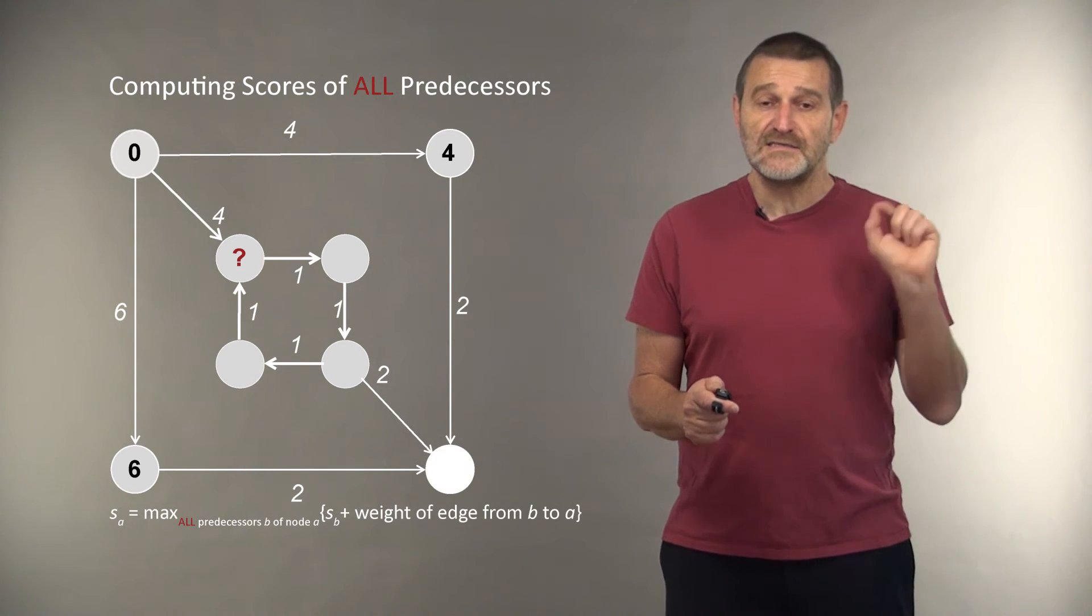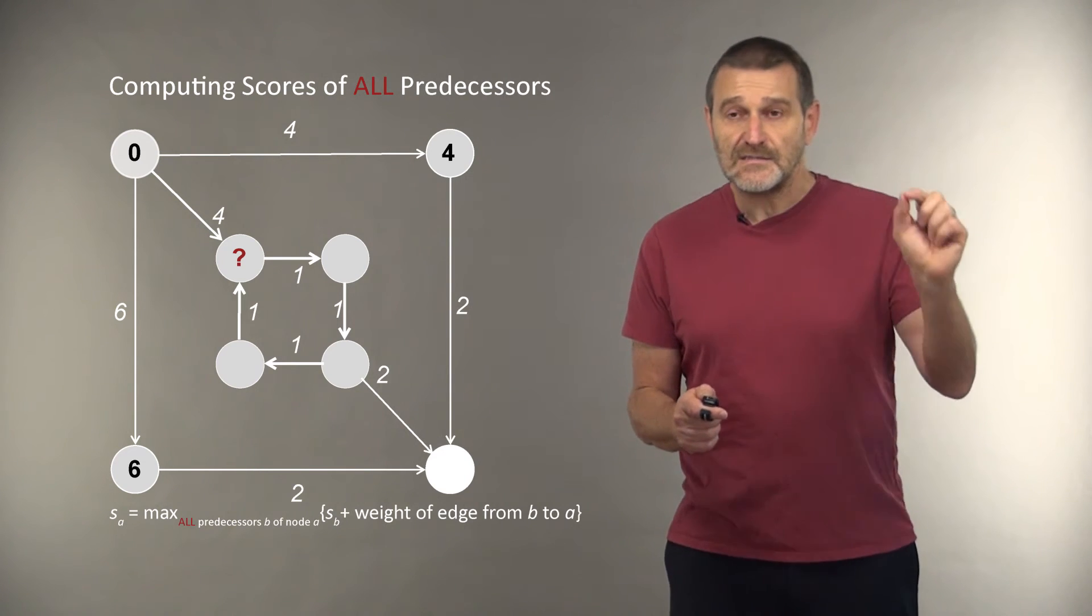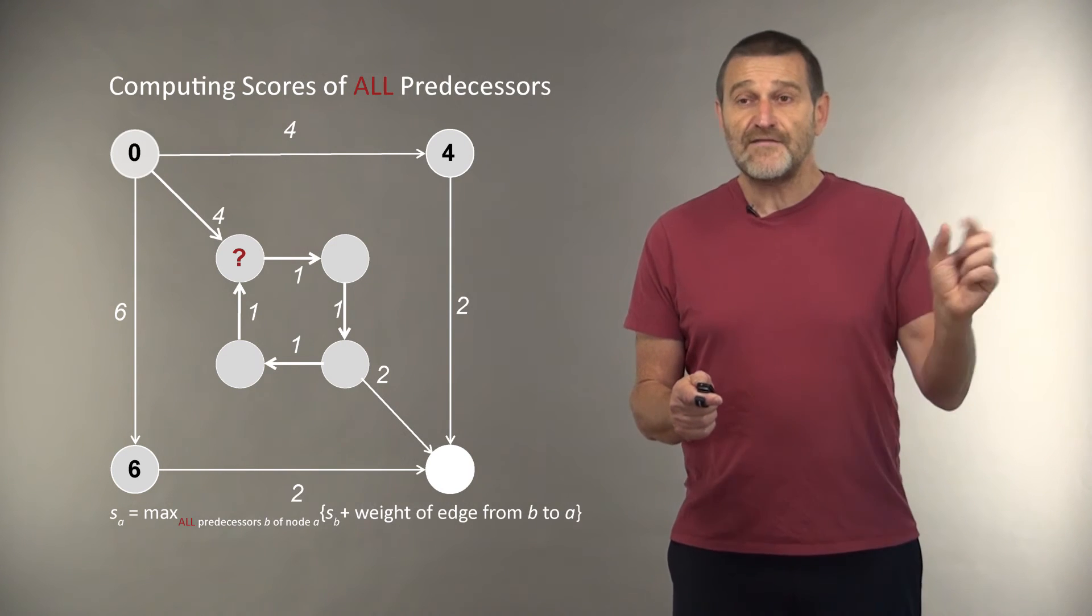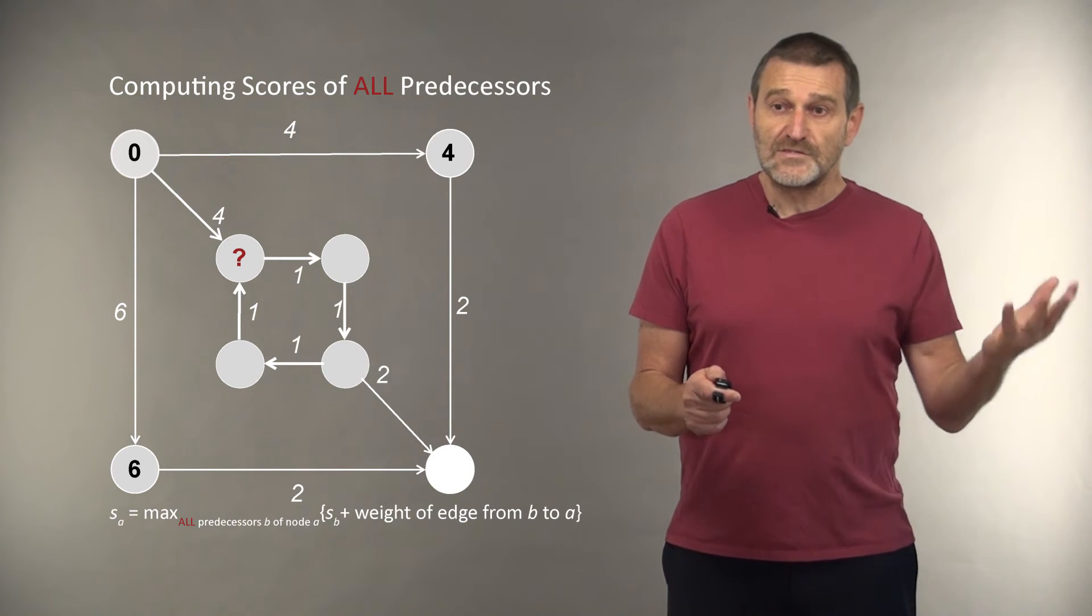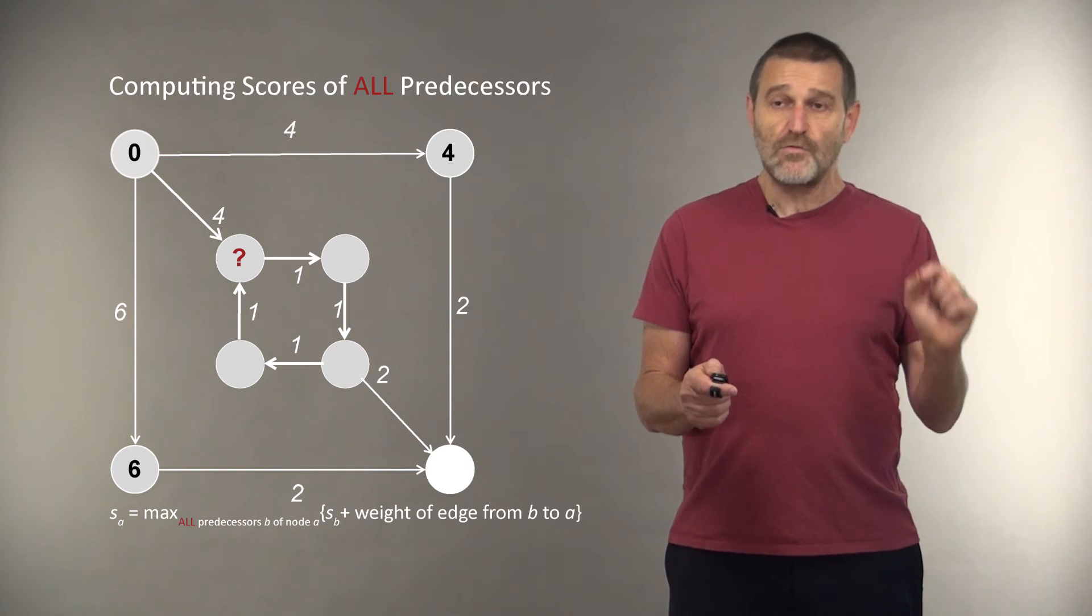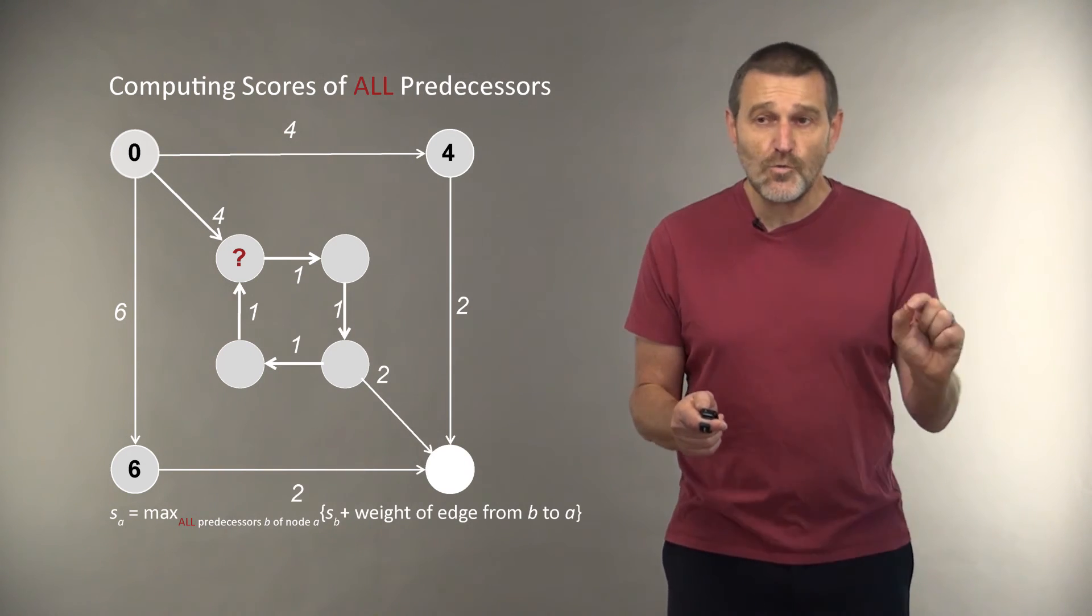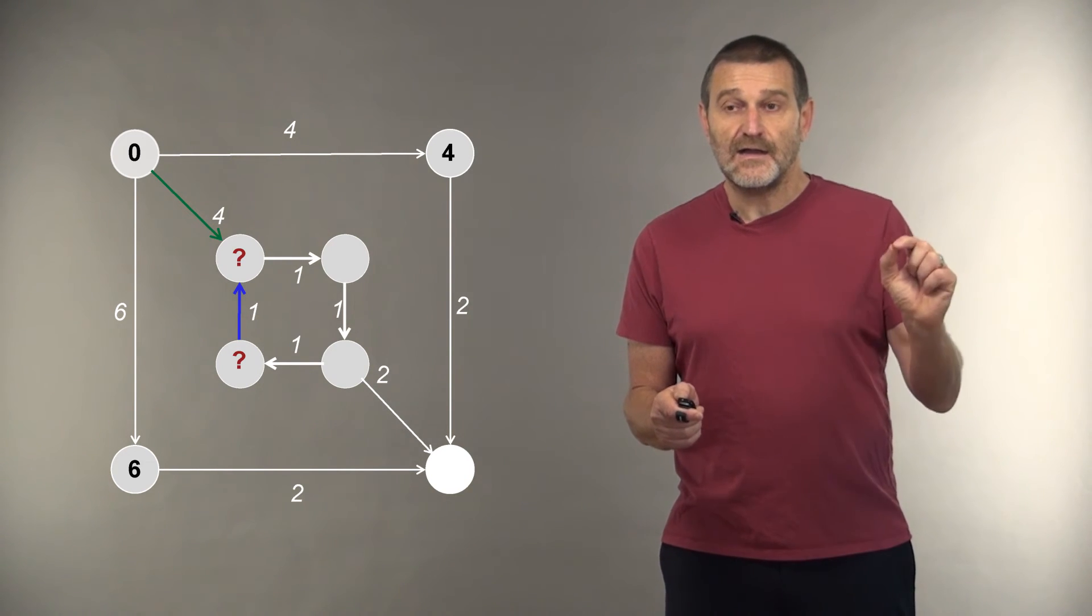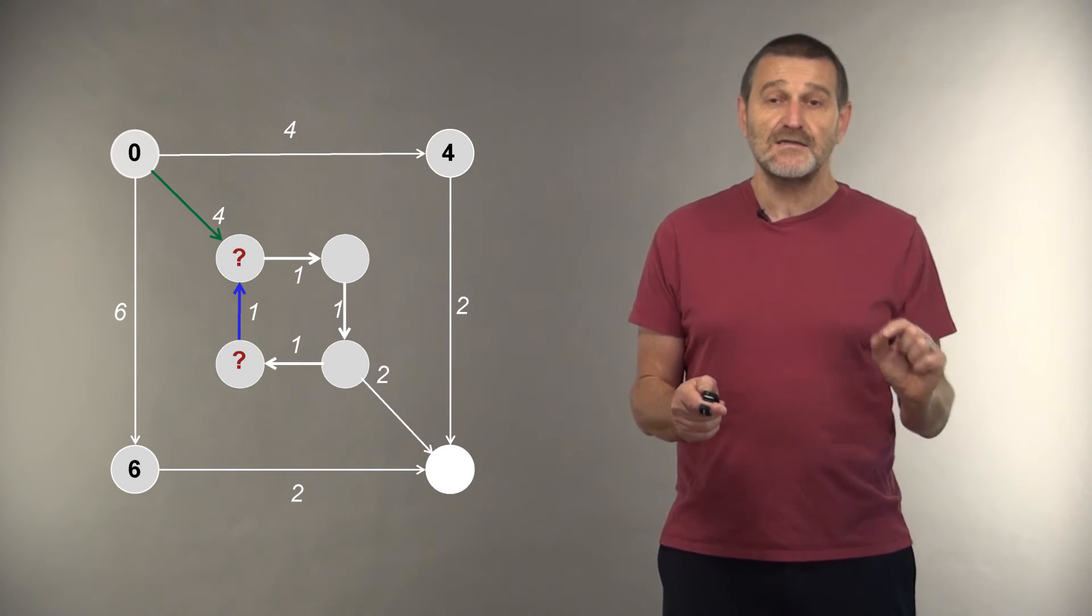So let's try to apply this approach to a simple graph shown here. We start from the initial node, and of course, the length of the longest path to this node is zero. And we can compute two other scores for two other nodes, 4 and 6. And now, let's try to compute the score for the node shown by the question mark. There are two edges entering into this node. The score of one predecessor is known at zero, but the score of another predecessor is unknown.